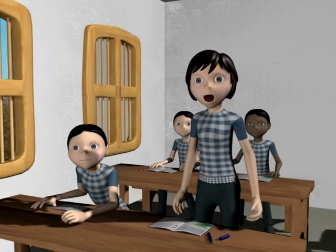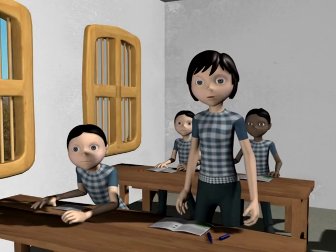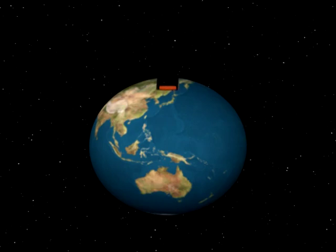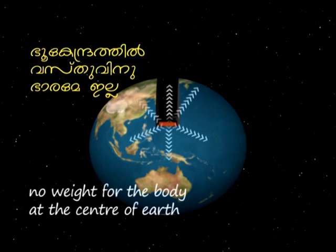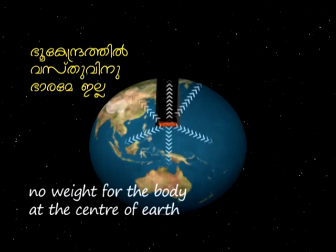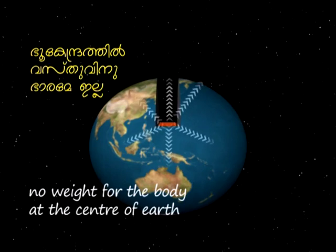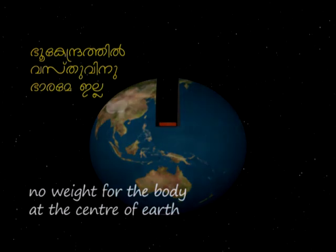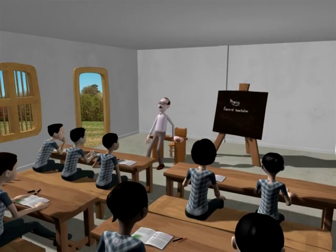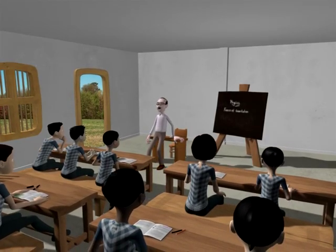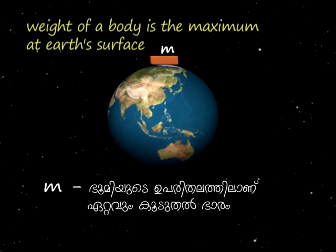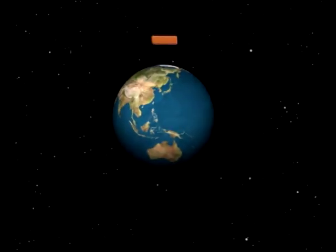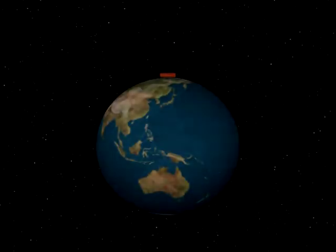At the center of the earth, the body has no weight because the forces of attraction from different sides of the earth, which are equal in strength, cancel each other. In short, the weight of a body is maximum when it is on the earth's surface, and it decreases when the body is moved either outward or inward.